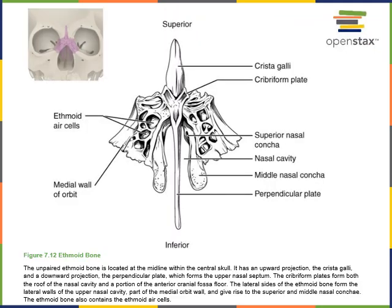The ethmoid bone forms the roof of the nasal cavity, and there is a projection that extends down along the midline to form part of the nasal cavity wall.